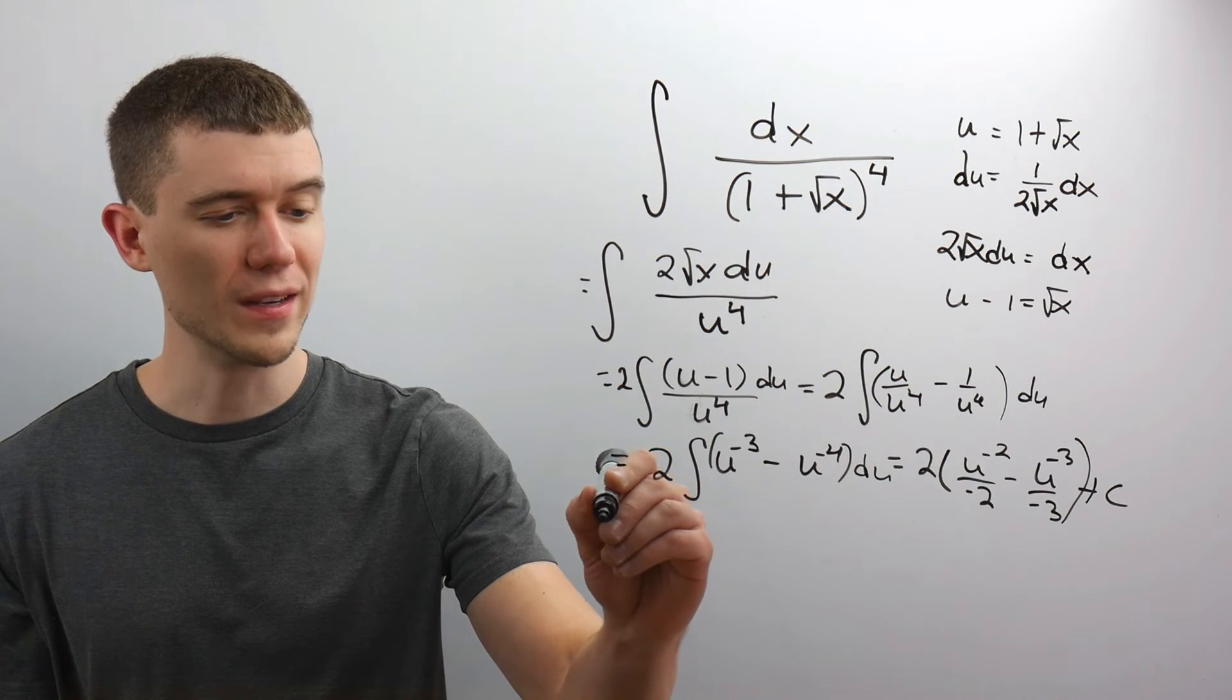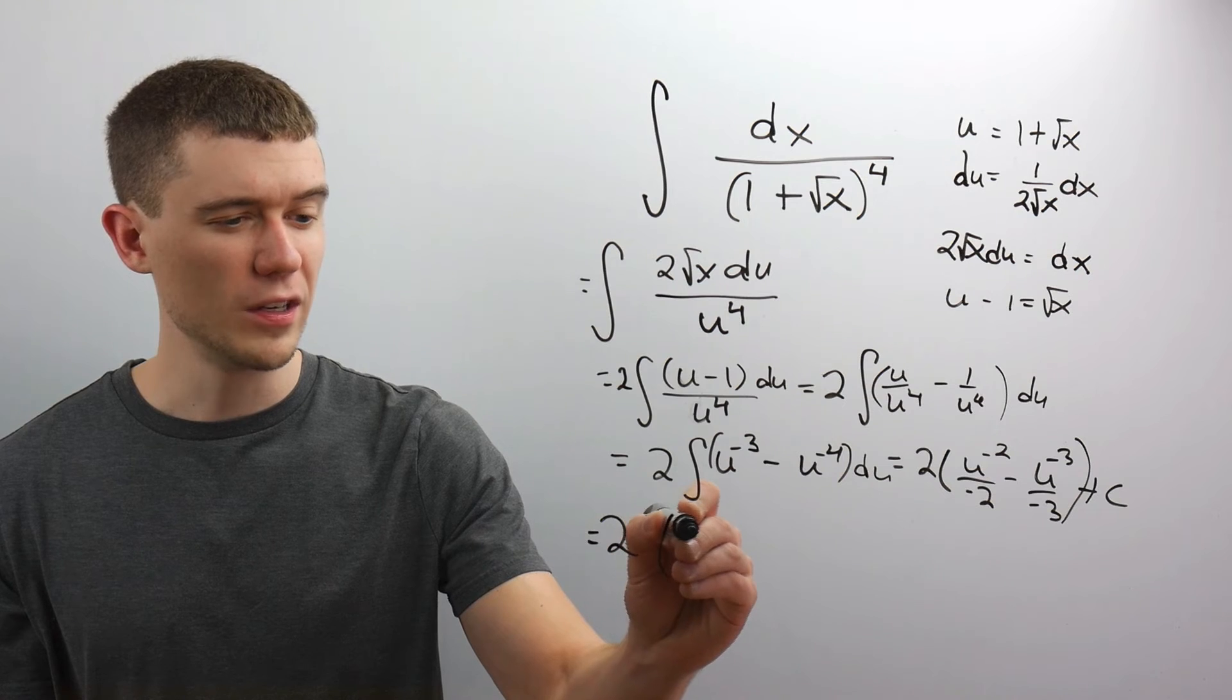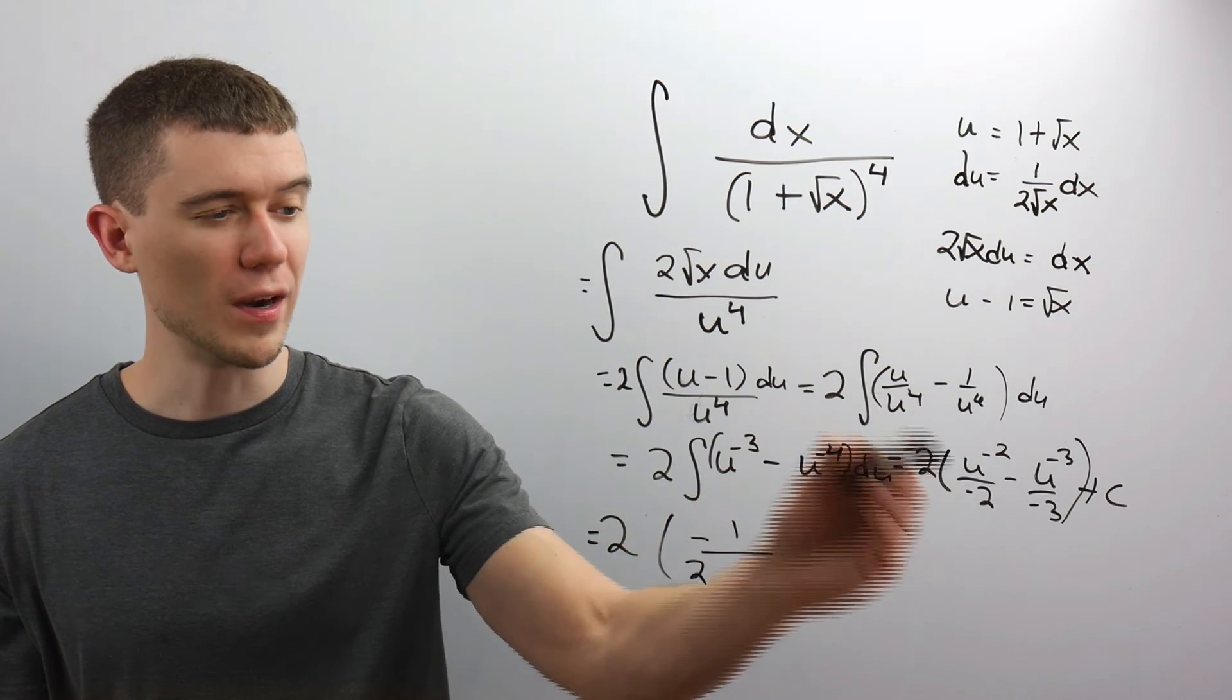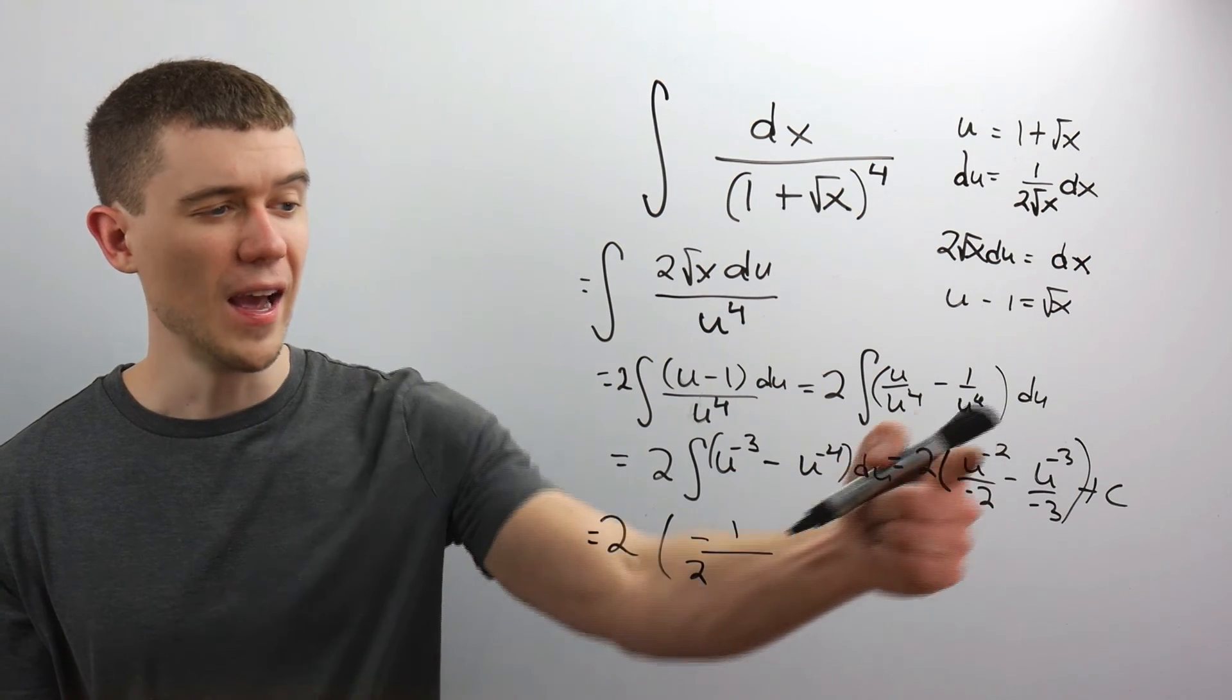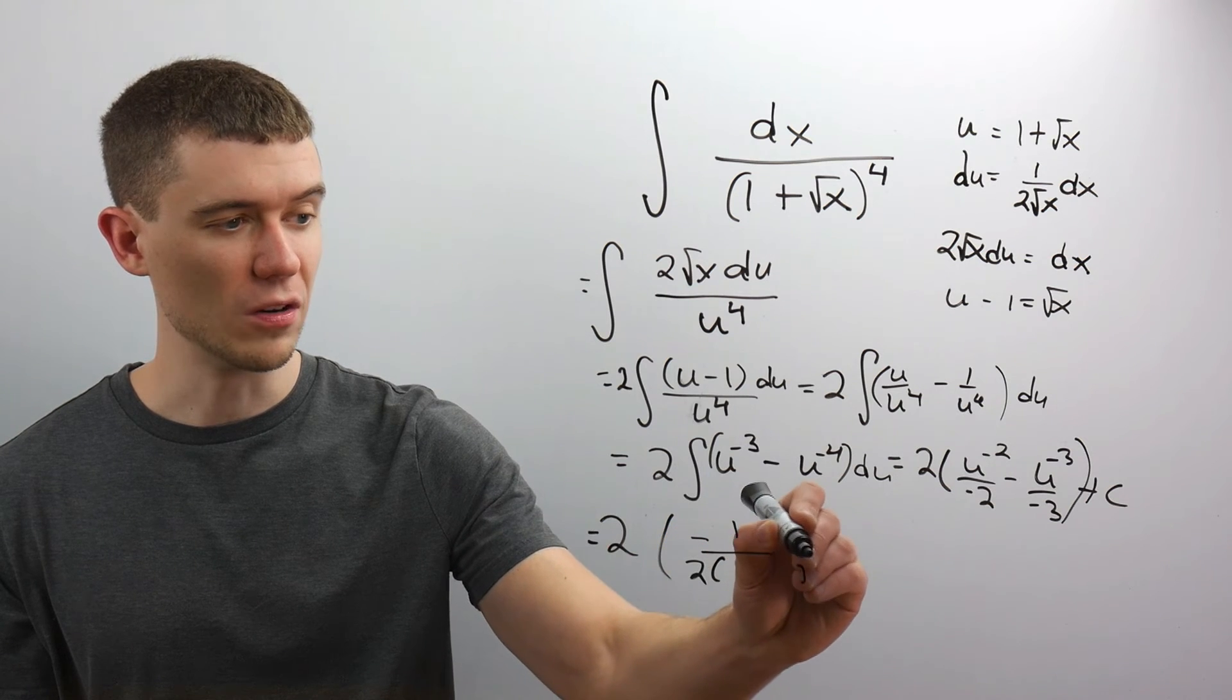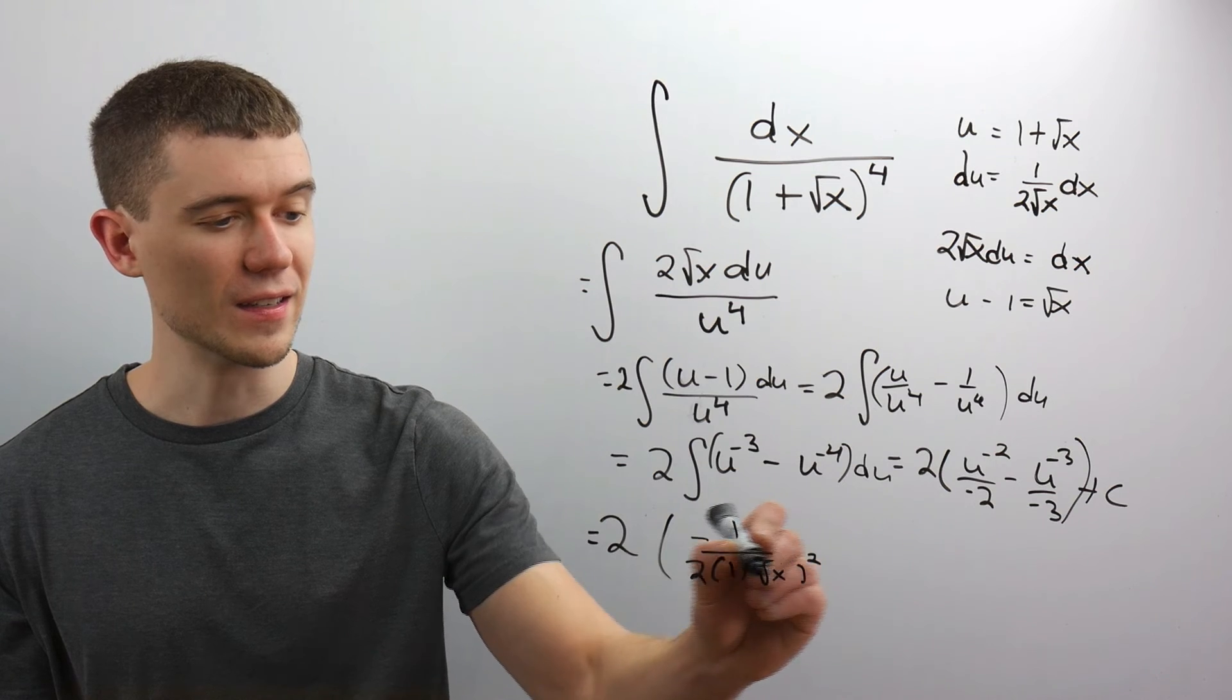So I could rewrite this a number of different ways. Maybe I'll just leave the 2 out front. I'd probably just leave this as a negative 1 over 2, just rewriting the over minus 2 as minus 1 half. And I'd rewrite this with a positive exponent in the denominator squared. U was 1 plus square root x.